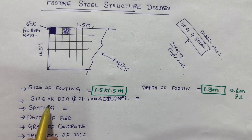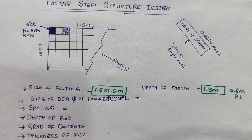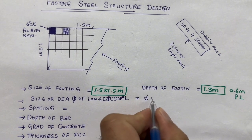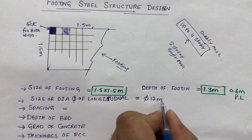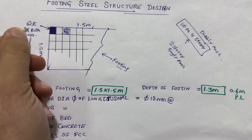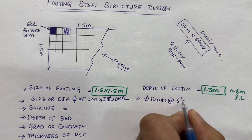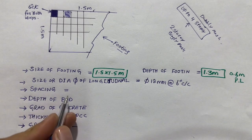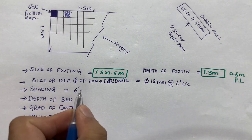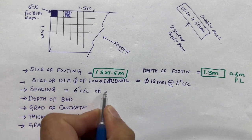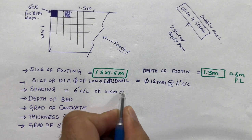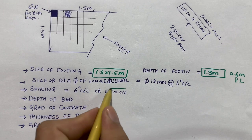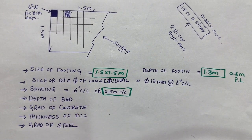Next, the size or diameter of the longitudinal bar: use 12 millimeter diameter steel rod with a spacing of 6 inches center to center. The spacing, as discussed before, is 6 inches center to center, which you can also say is 0.15 meter center to center, or 15 centimeter, which equals 6 inches.